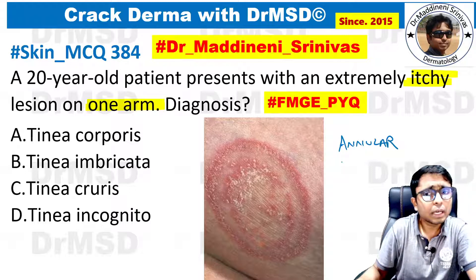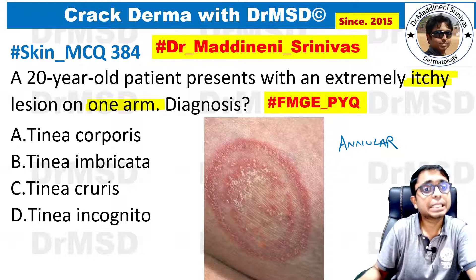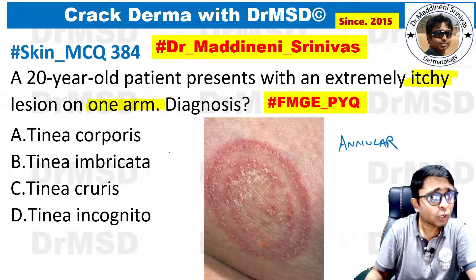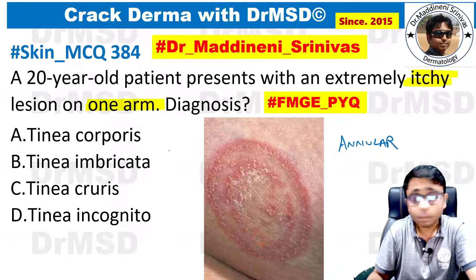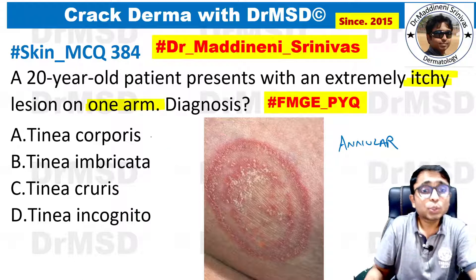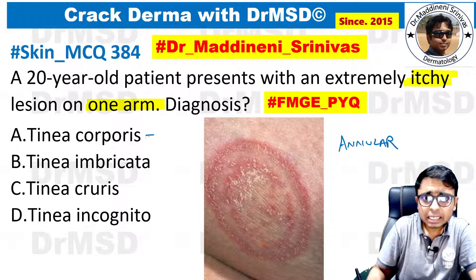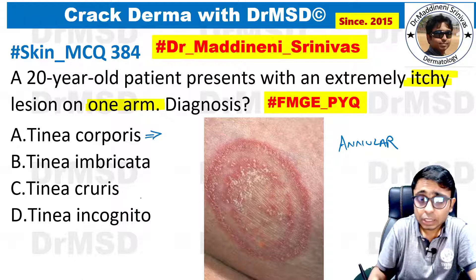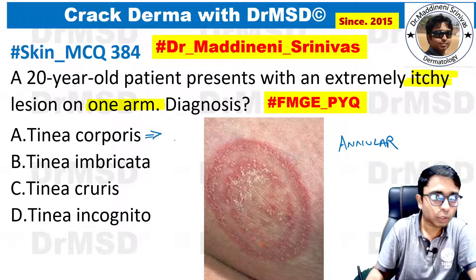If this kind of a clinical picture is observed, we should think about tinea. But if you look at all the options, all of them are tinea. So let us break down each one of them: tinea corporis, tinea imbricata, tinea cruris, and tinea incognito.